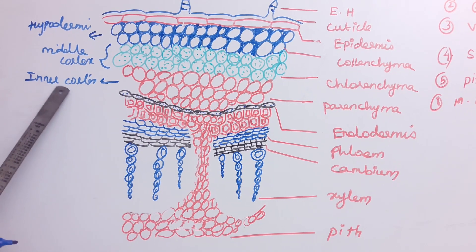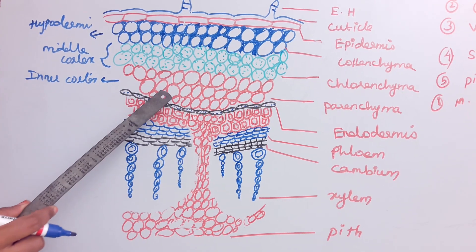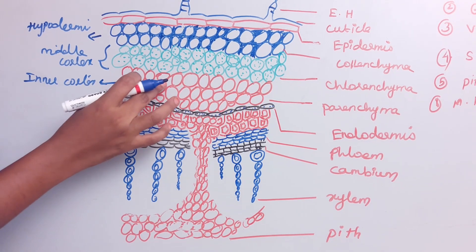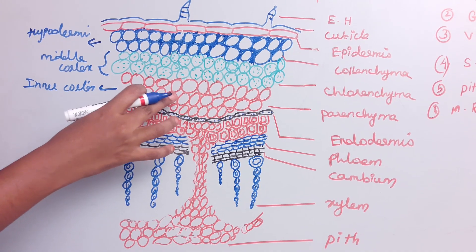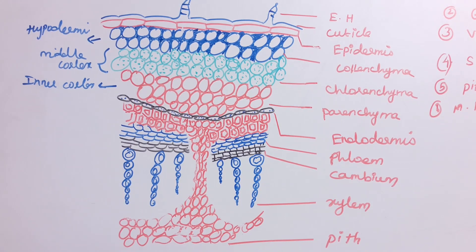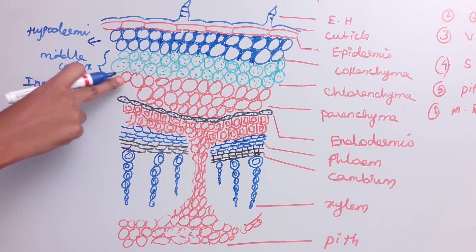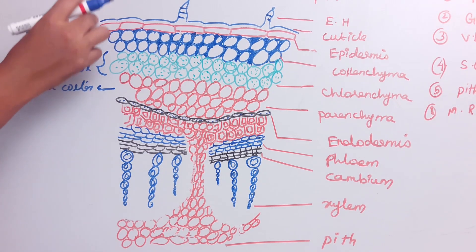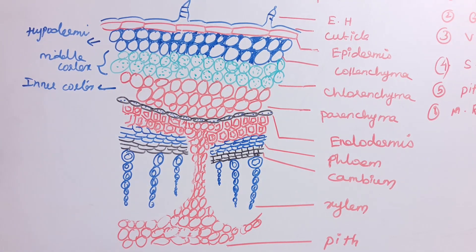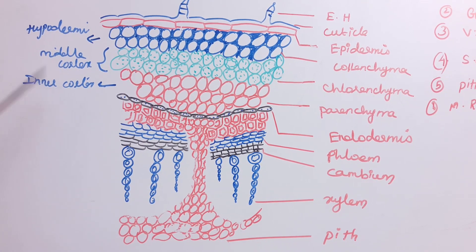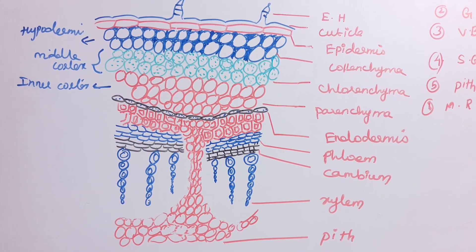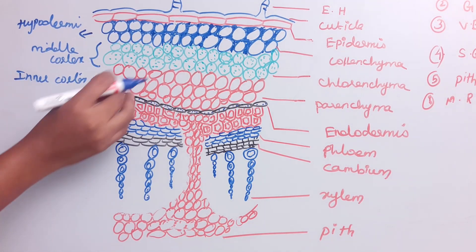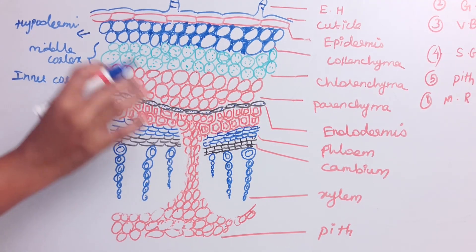Below the middle cortex is the inner cortex, which is made up of parenchyma cells. The parenchyma cells are round-shaped with intercellular spaces. The functions of the inner cortex include food storage and gas exchange. So the cortex region consists of hypodermis, middle cortex, and inner cortex.